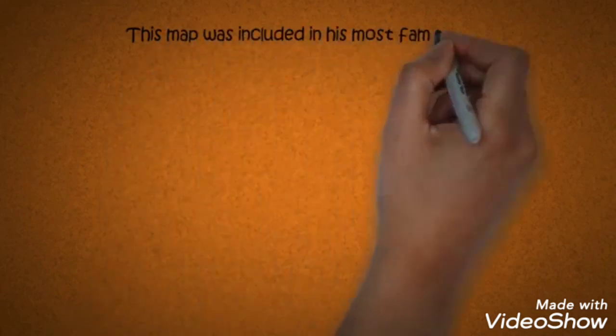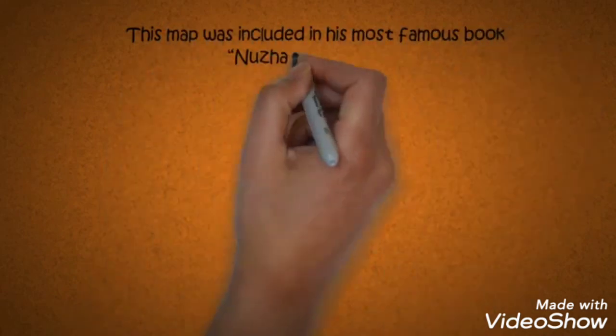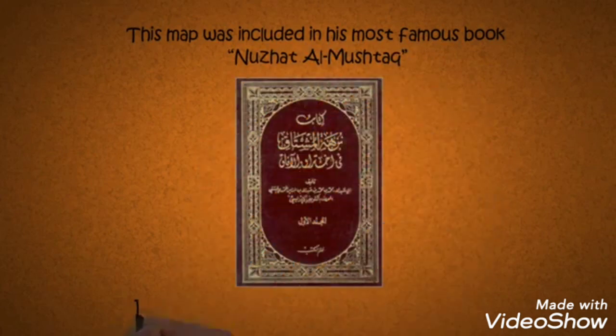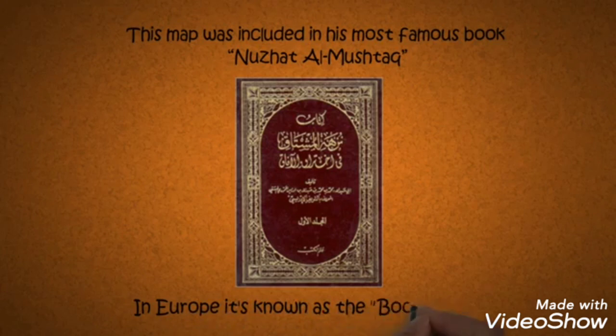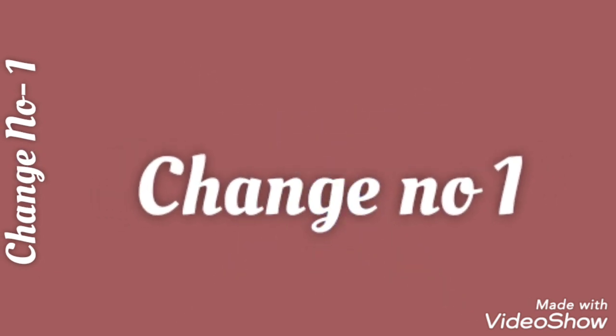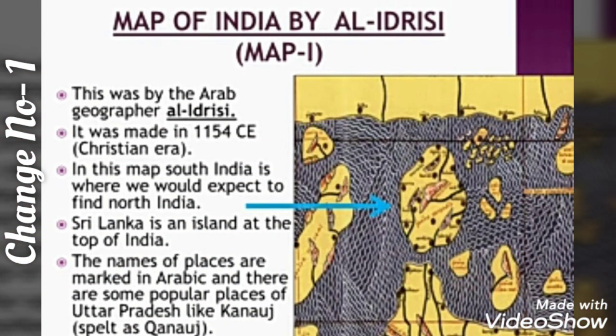This map was included in his most famous book, Nusrat al-Mushpaq. In Europe, it's known as the Book of Roger. Let's have a look at change number one. So you came to know that one of the most famous maps was designed by Muhammad al-Idrissi. You can see a map designed by al-Idrissi here.